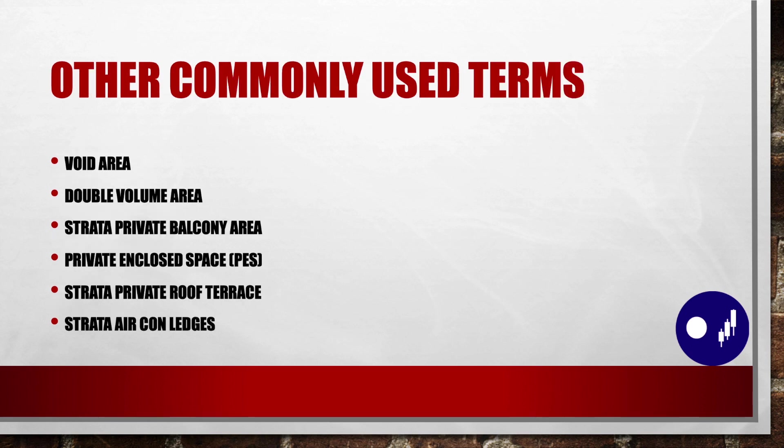Other commonly used terms include void area, double volume area, strata private balcony area, private enclosed space, strata private roof terrace, and strata aircon ledges.